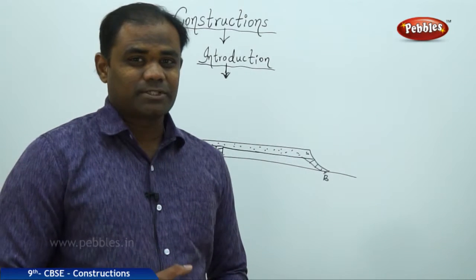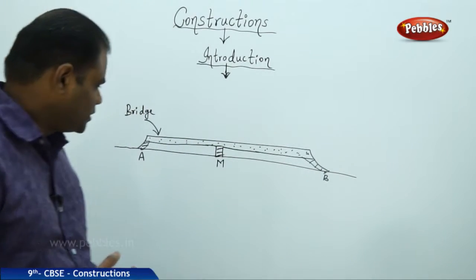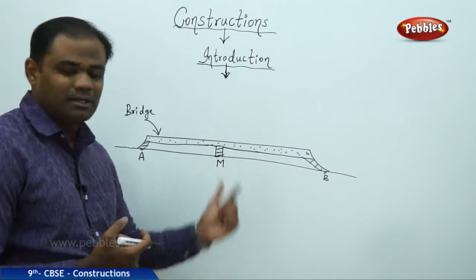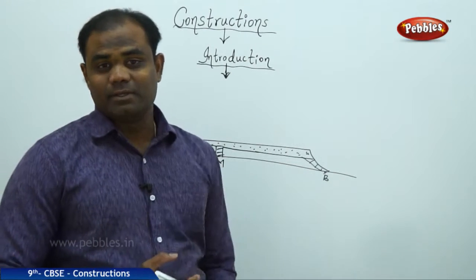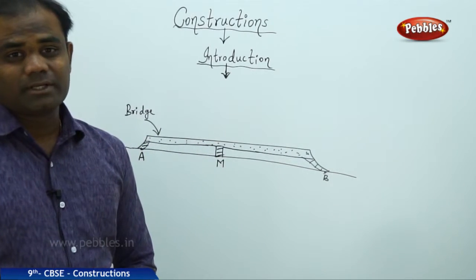But now the biggest question which comes is, how could the engineer identify the middle value or exactly the middle point of this length AB is the biggest question in constructions.